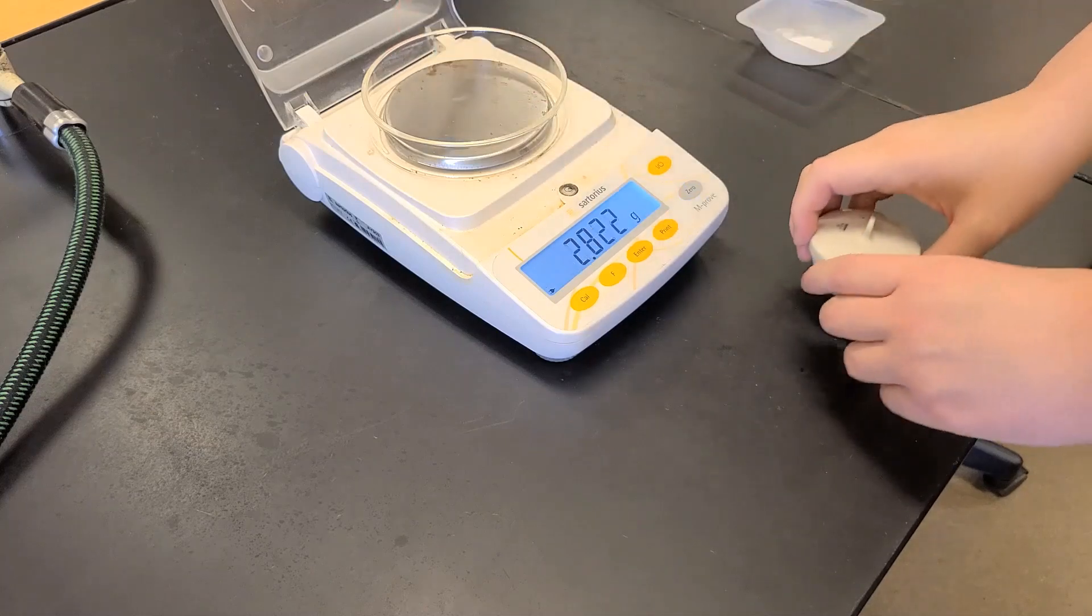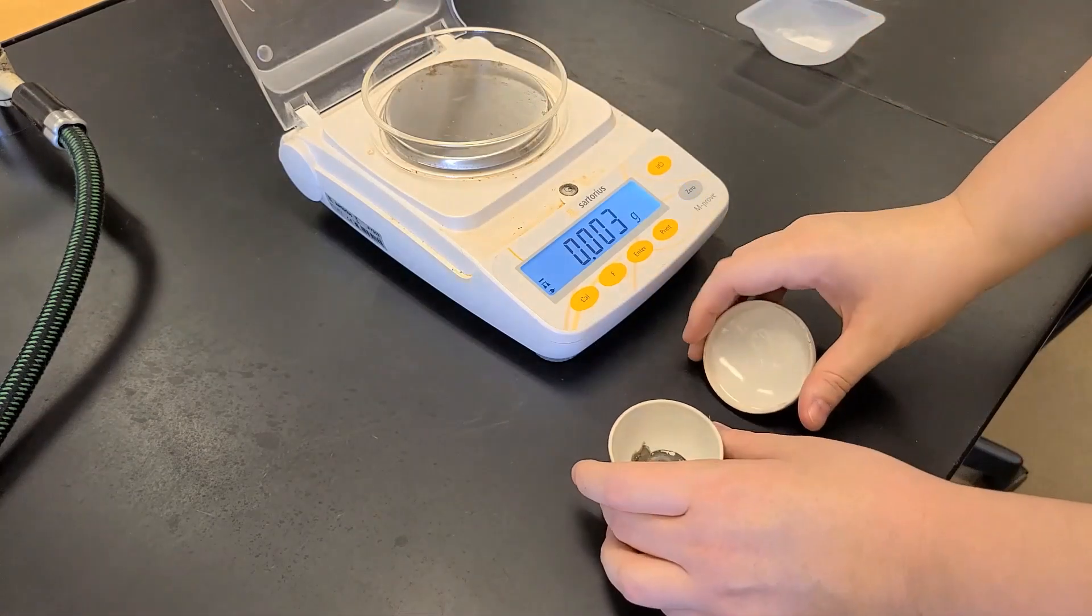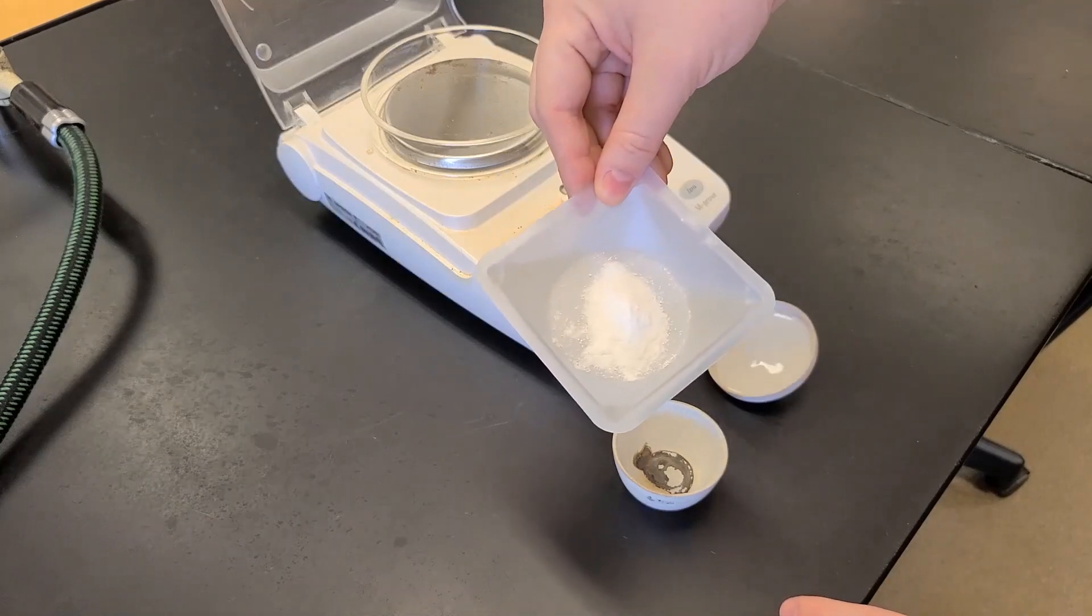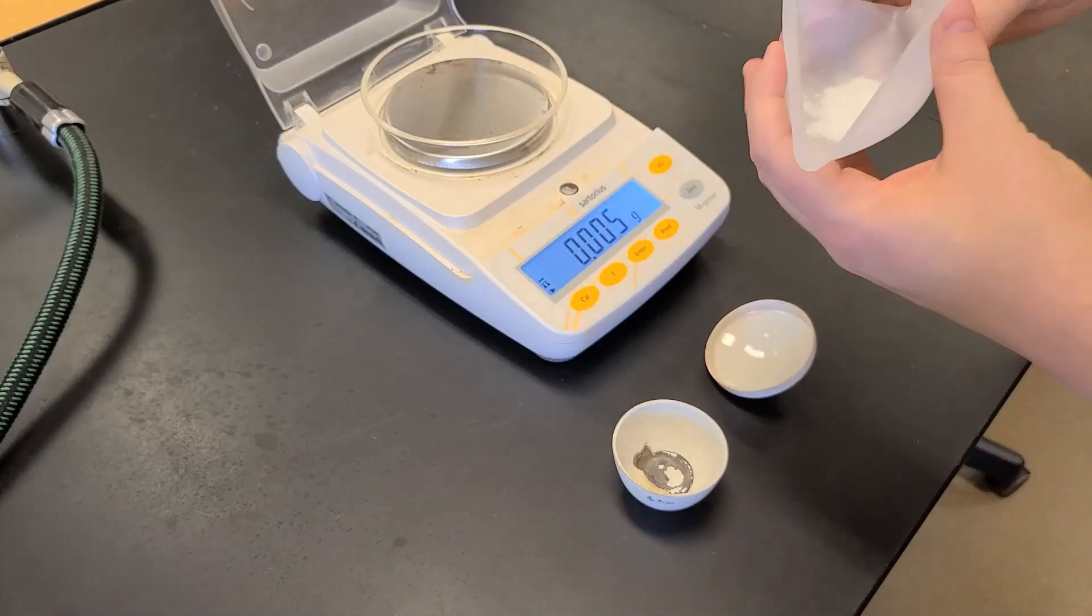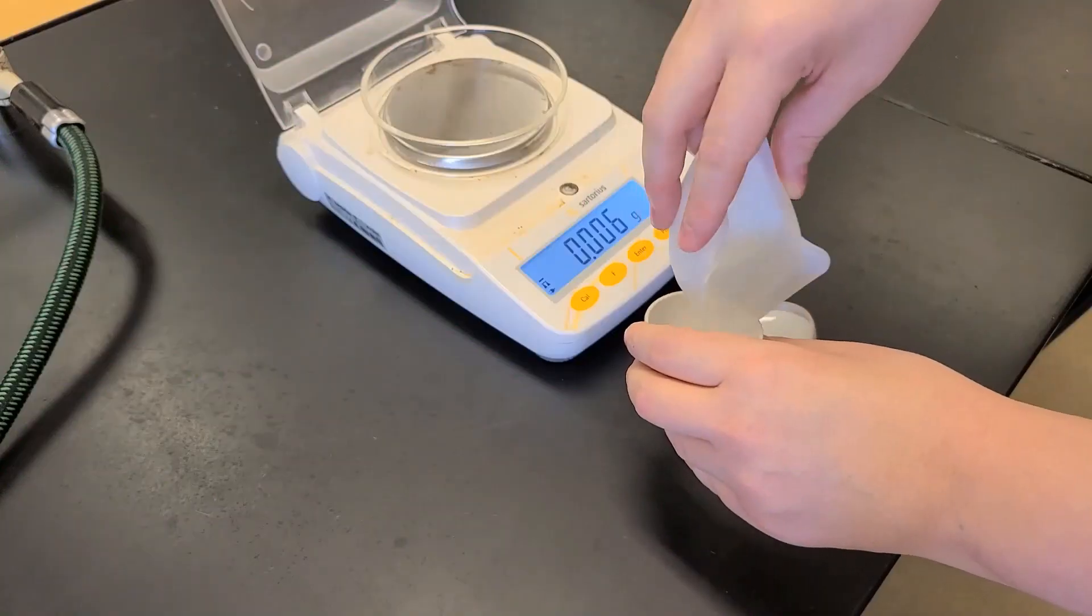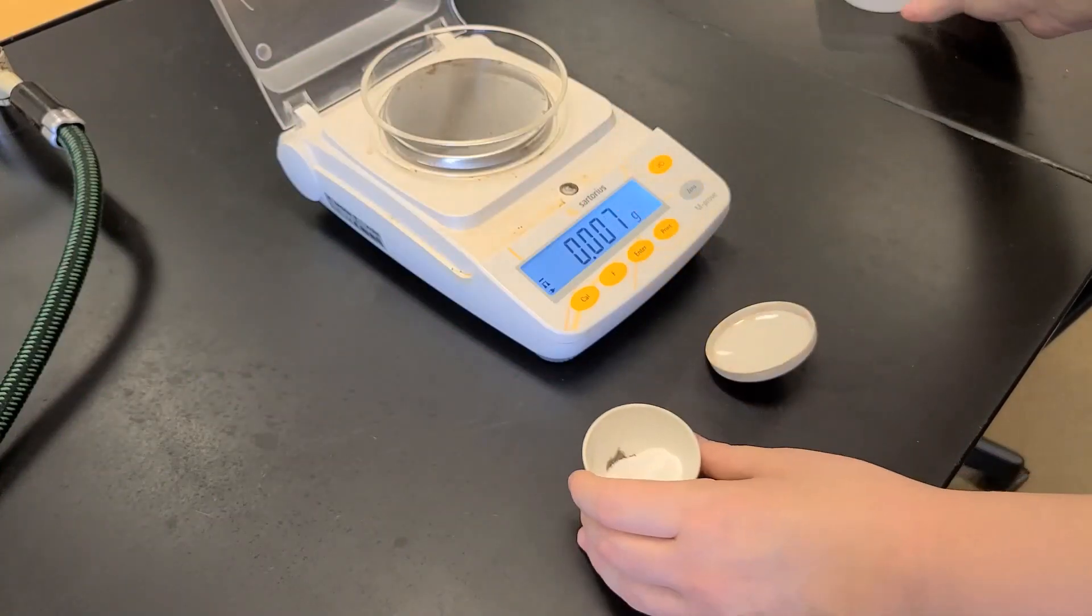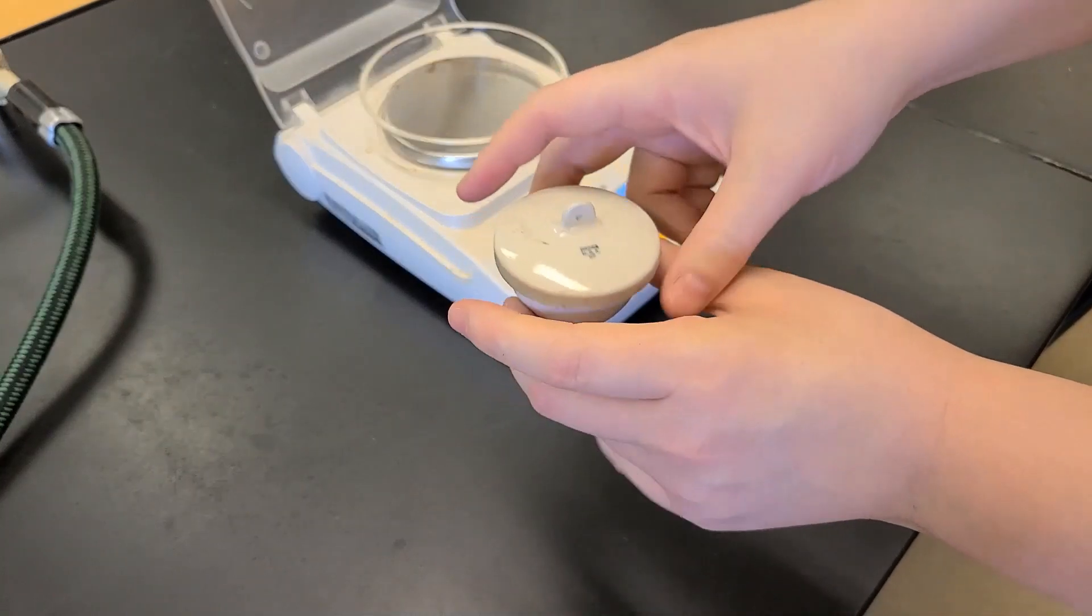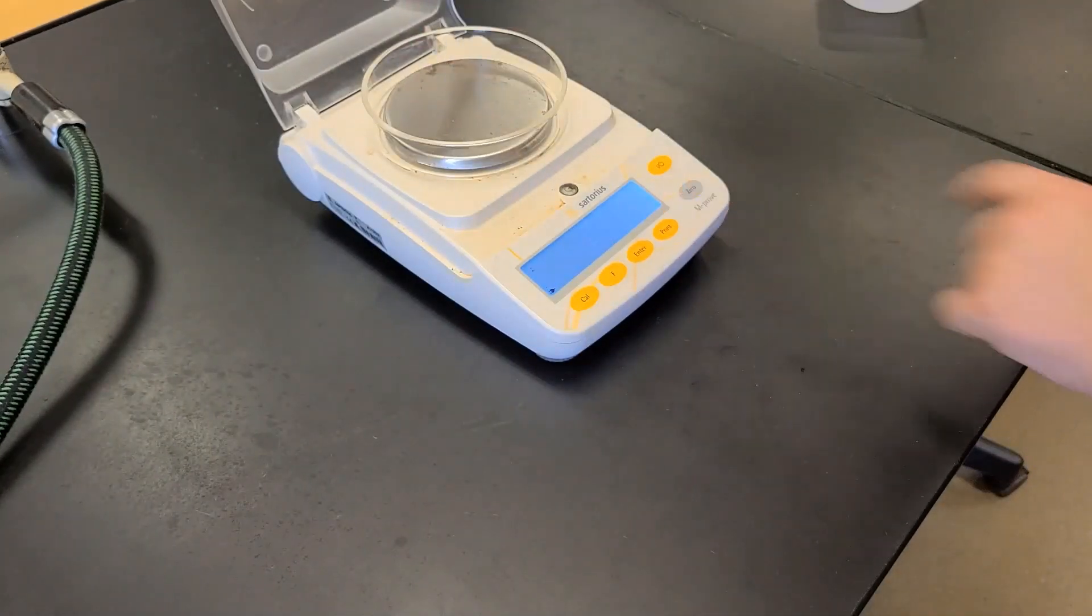Now that we know the mass of the empty crucible with lid, we need to add our mixture, which we are going to purify. This is a mixture of sodium hydrogen carbonate and sodium carbonate. We'll add that to the crucible and return crucible and lid to the scale and get a mass of the crucible, lid, and sample.